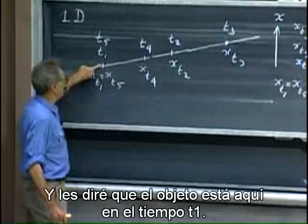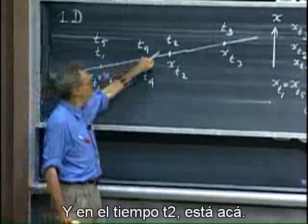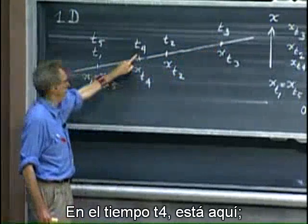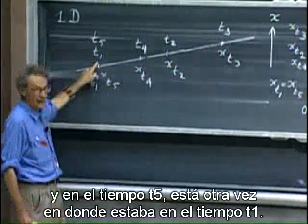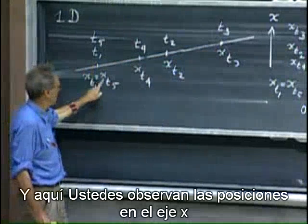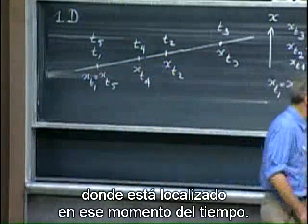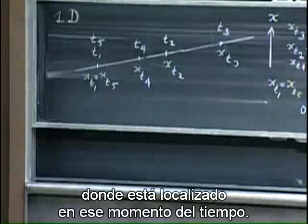I'll tell you that the object is here at time t1, at time t2 it's here, at time t3 it's there, time t4 it's here, and at time t5 it's back where it was at t1. And here you see the positions in x where it is located at that moment in time.